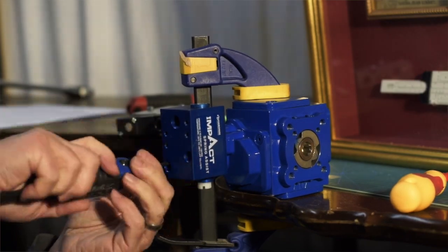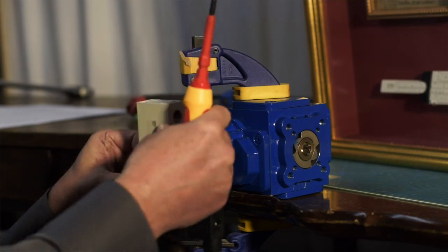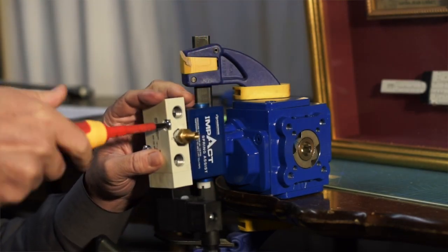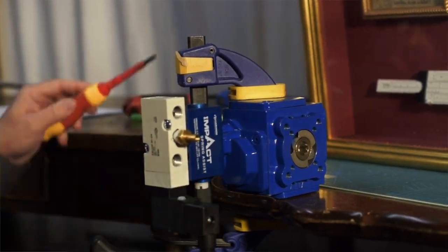So this is the method of installing the impact booster between the Nemura valve and the compact actuator. As you can see, the ported air in and outlets are threaded and accommodate Nemura attachment.